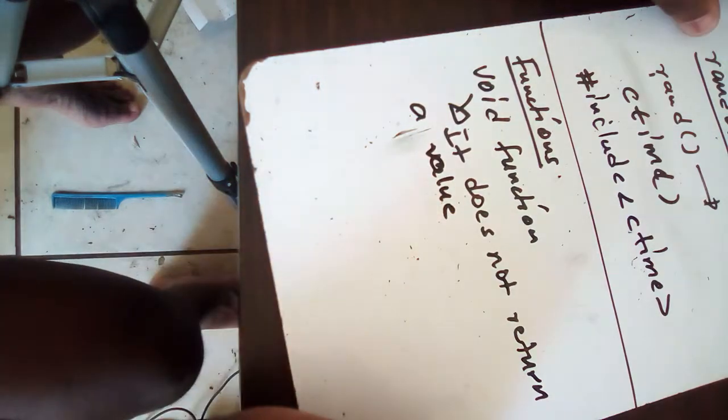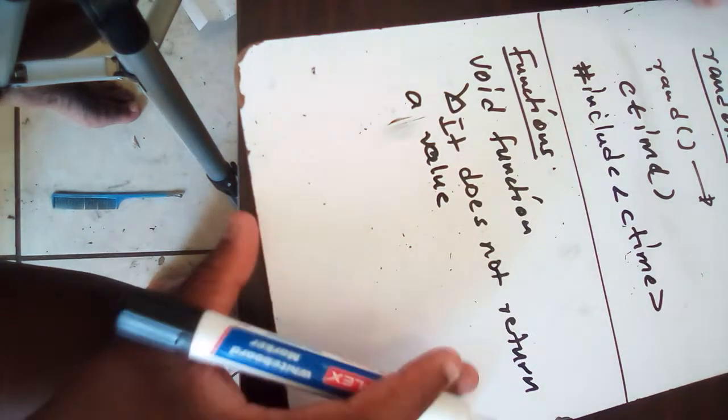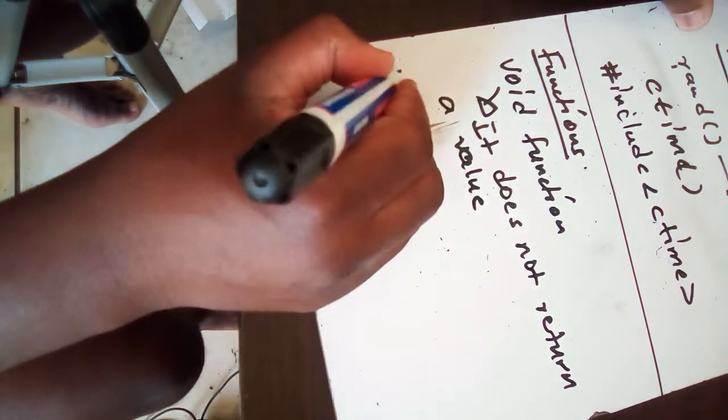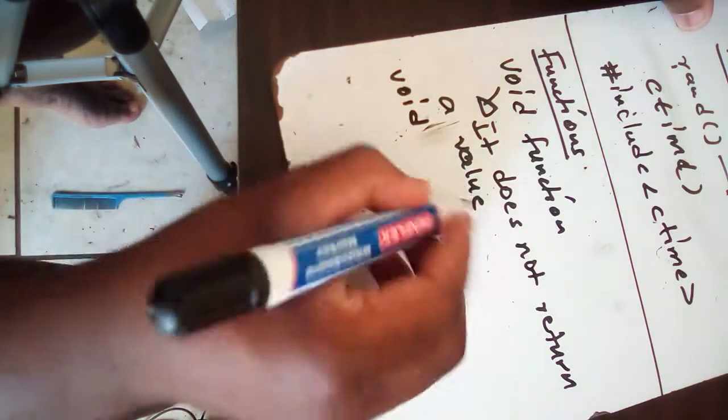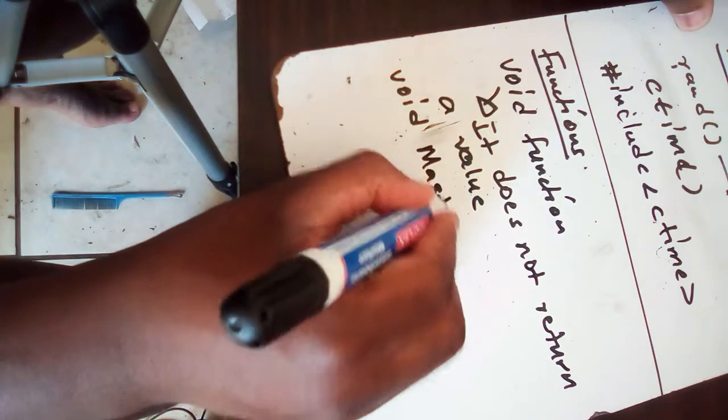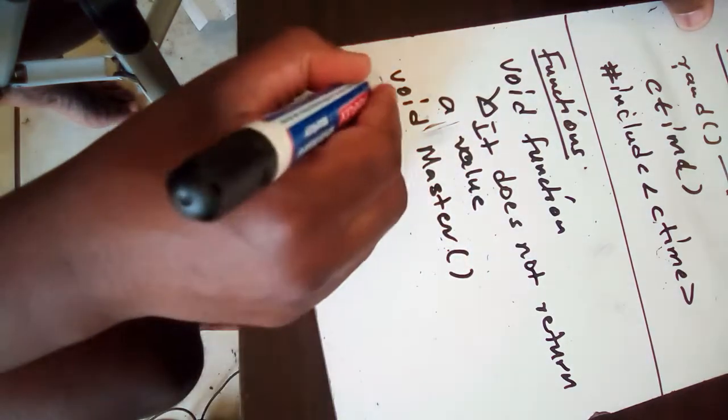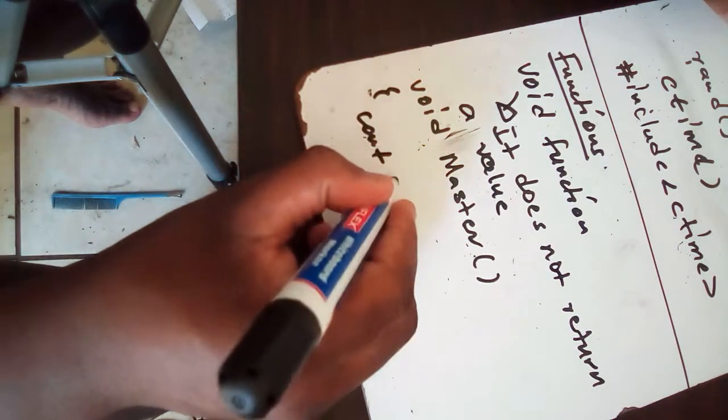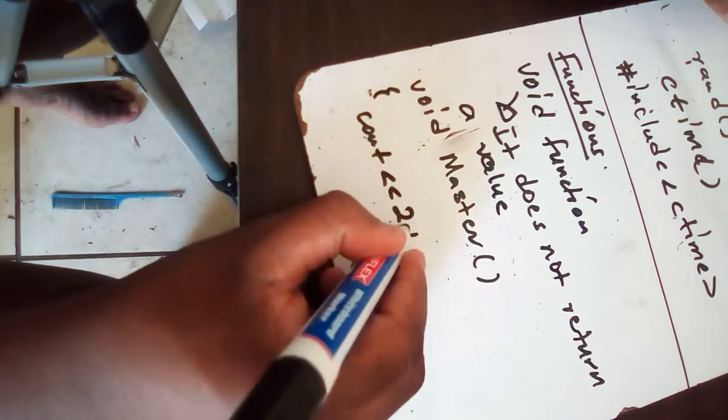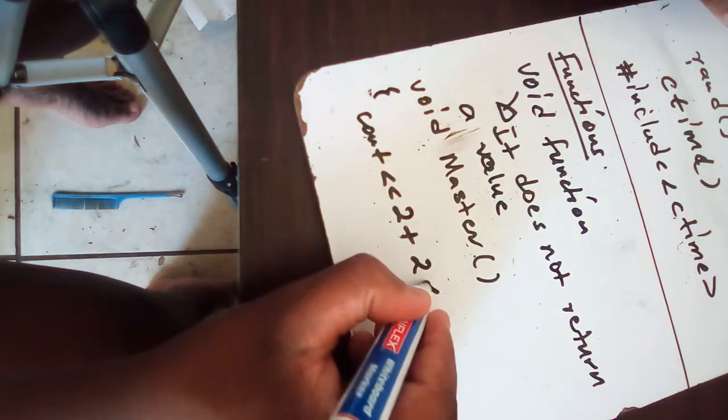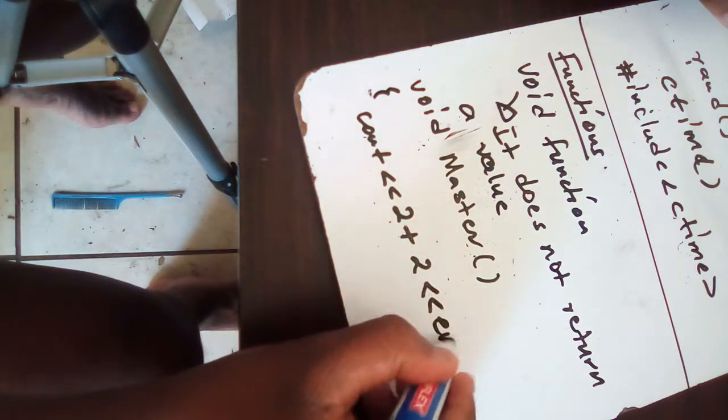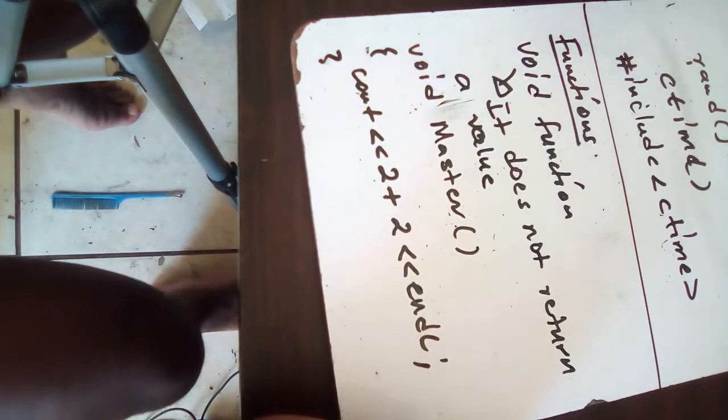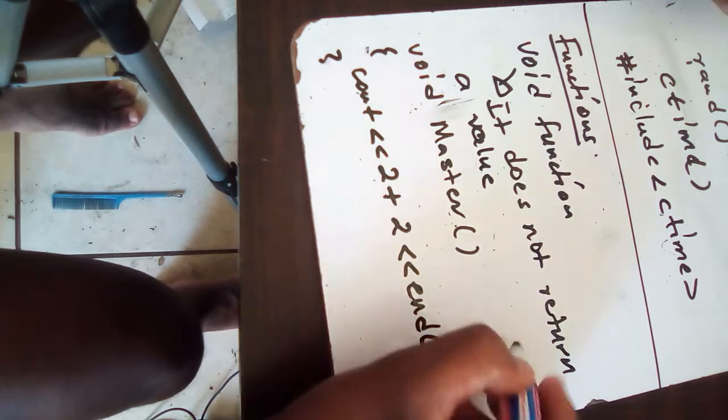Void function doesn't mean, for example, if I say void master, then after that inside void master I say cout 2 plus 2 and endl, it doesn't mean that if you run this function it won't give you 2. It's gonna give you 2.